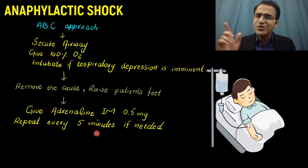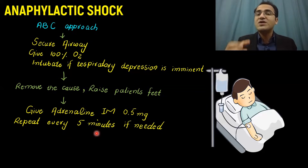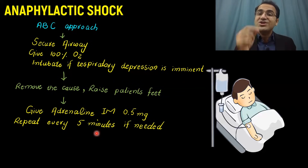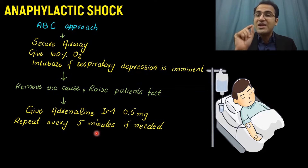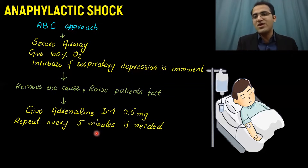Give adrenaline IM 0.5 mg and repeat it every 5 minutes if needed. Adrenaline causes vasoconstriction and combats the hypotension, and it also causes bronchodilation. Note that it is adrenaline — epinephrine — that causes bronchodilation. Norepinephrine does not cause bronchodilation, therefore norepinephrine is not given. Adrenaline is given because it causes bronchodilation.